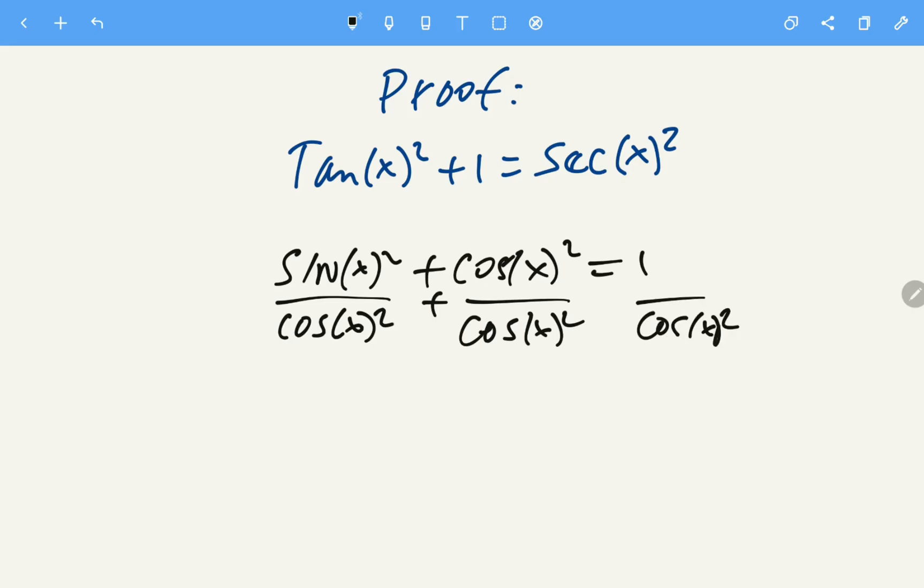So sine over cosine is just tangent. Sorry, sine over cosine is just tan(x)².